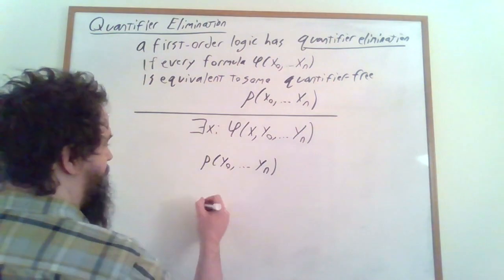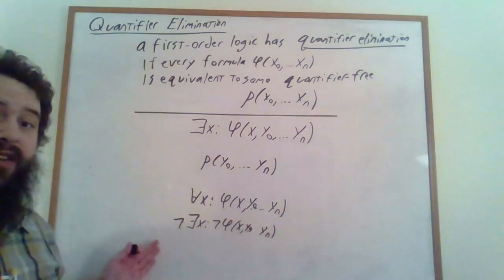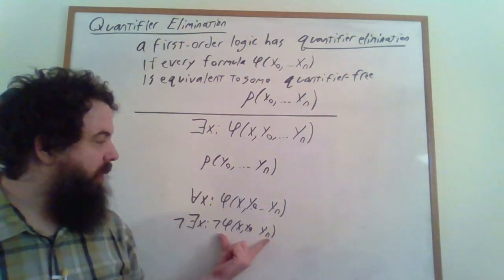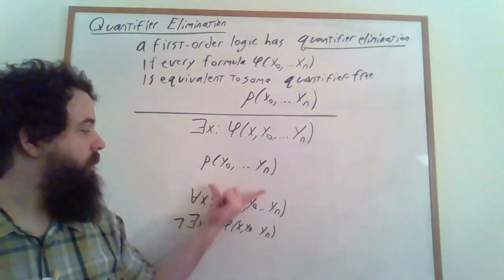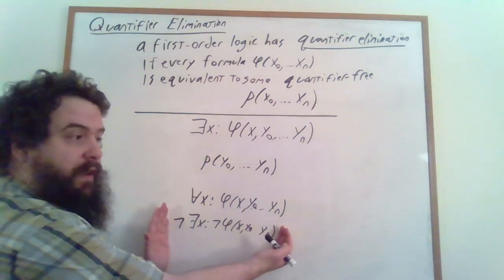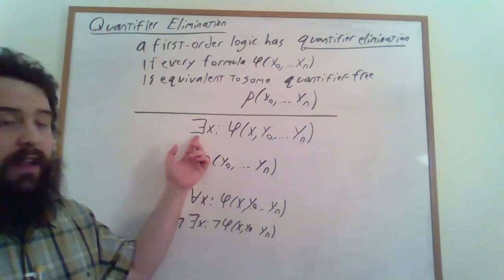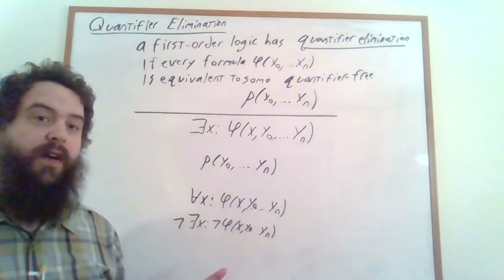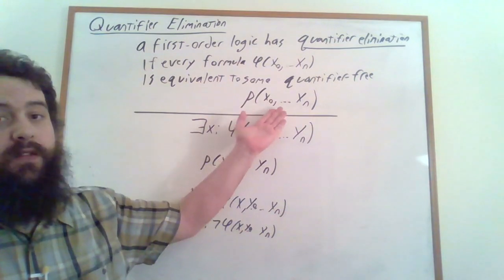If we have a for-all quantifier, we're going to have to translate this into the equivalent: there does not exist a counterexample. Then we have an existential quantifier applied to some formula that doesn't have any quantifiers in it, so we can use the same sort of algorithm to turn this bit into a quantifier-free formula. And when we add a negation on the front of it, it's still a quantifier-free formula. So we work our way from the inside out, and every time we encounter an existential or universal quantifier, we use this algorithm to get rid of that quantifier, giving us a very algorithmic way of turning a formula with quantifiers into an equivalent quantifier-free formula.